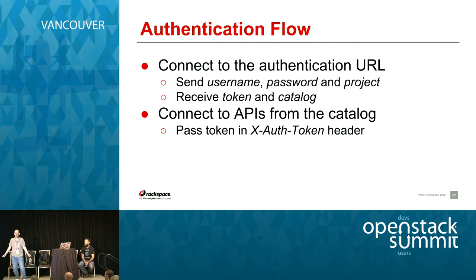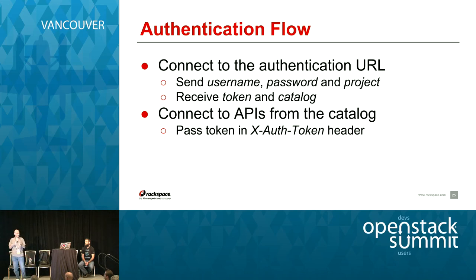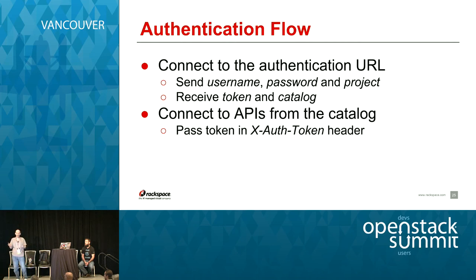The authentication flow is also very straightforward and works the same for all modules. Your application needs to know the authentication URL — in the same way you just need to type twitter.com. You send your credentials and OpenStack sends back the catalog and an access token. Then you find the service you need in the catalog and start sending requests directly to that service using the endpoint from the catalog. For every request you pass your token, and that module will know who you are.